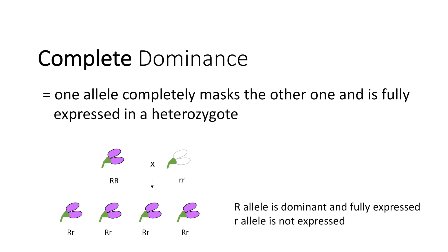I was talking about dominant alleles earlier, but I will quickly resume what complete dominance is, because we need it for the following explanations. Complete dominance is defined as one allele completely masking the other and being fully expressed in a heterozygote. In our example, the heterozygous offspring has fully expressed uppercase R alleles.